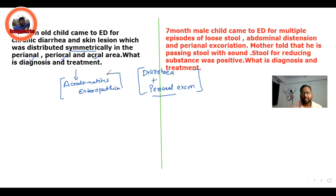The next question: a 7-month-old child came with multiple episodes of loose stool with abdominal distension and perianal excoriation. The mother also told that the child passed stool with sound, and stool for reducing substance was positive. This is the typical history of lactose intolerance.